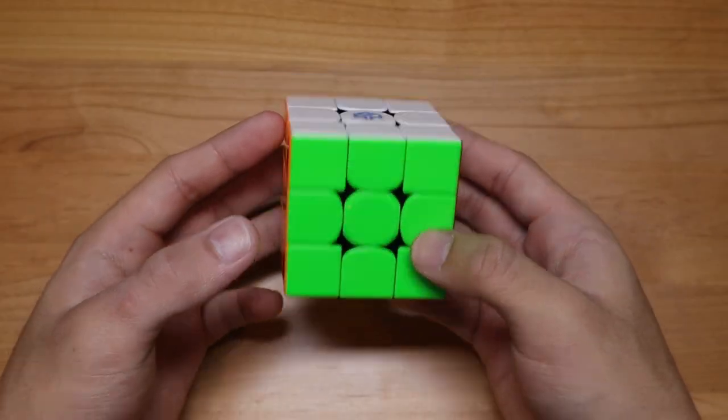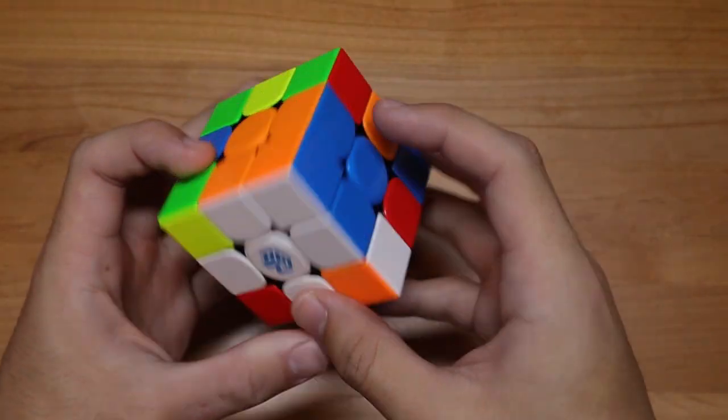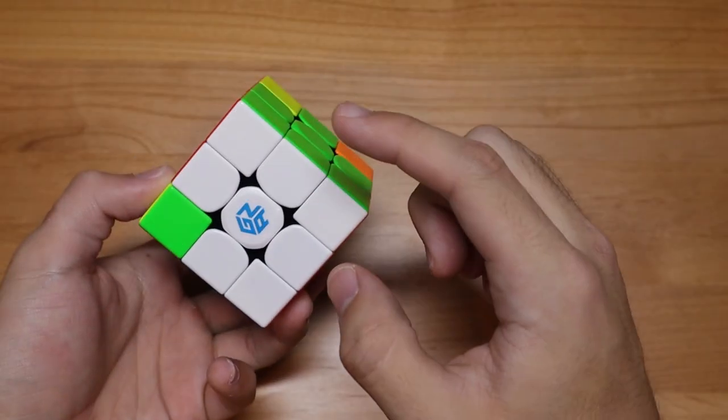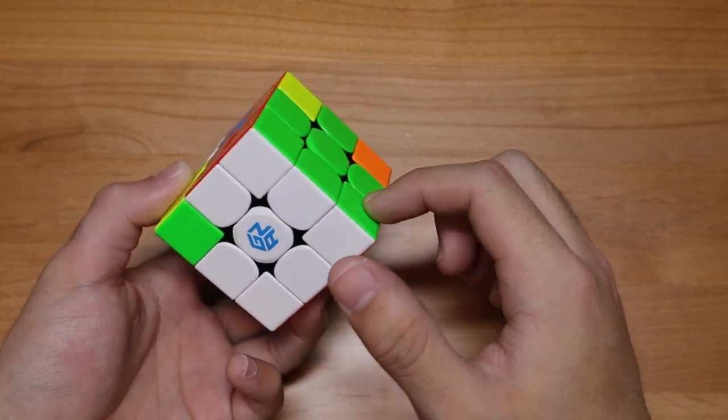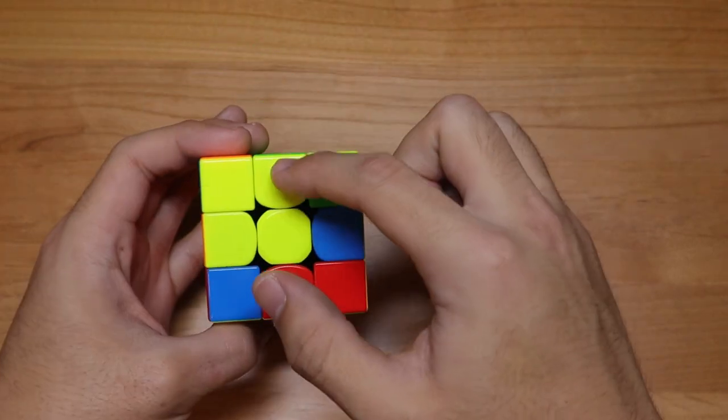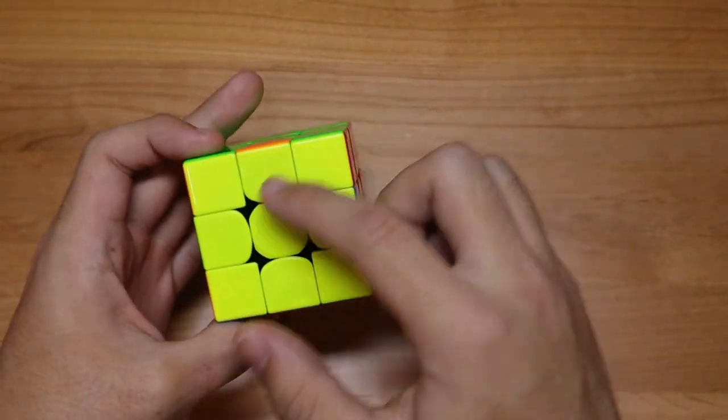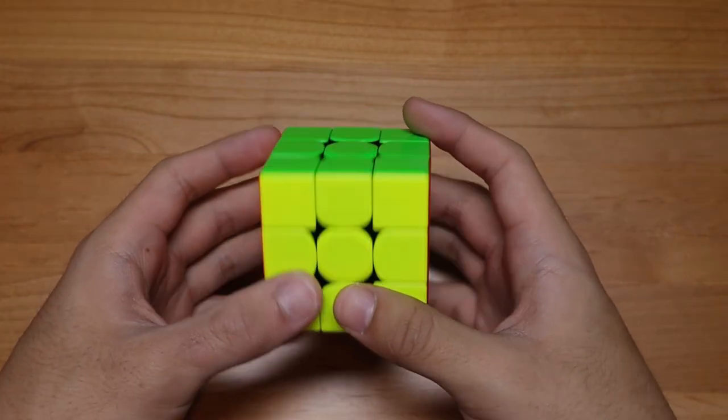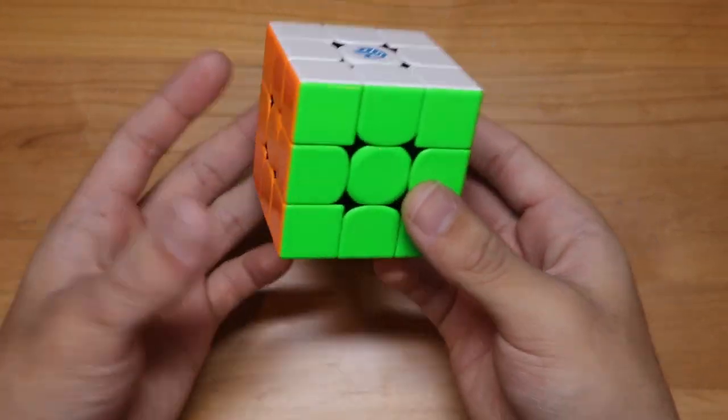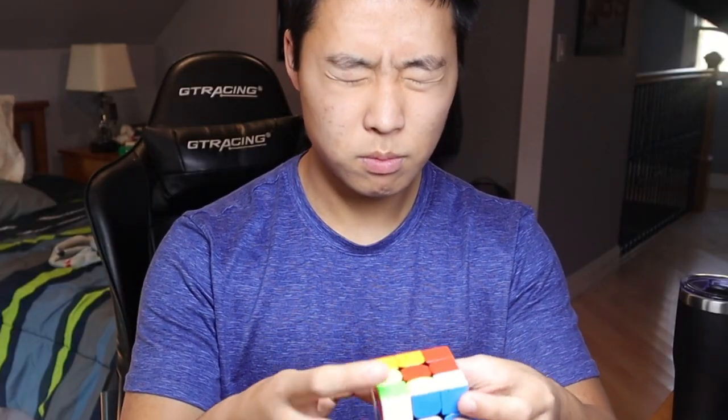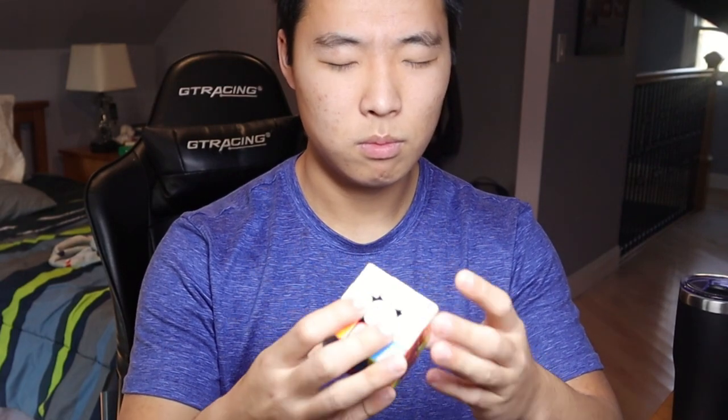A good starting point would be a breakdown like this: Cross plus one F2L pair, solving two more F2L pairs, your final F2L pair plus EO, OLL, and PLL. So you want to take all the time you need to plan your cross plus one and once you feel confident in your solution, close your eyes and solve it.